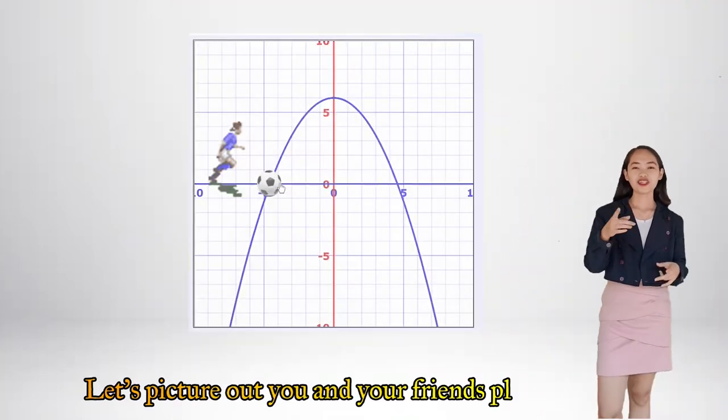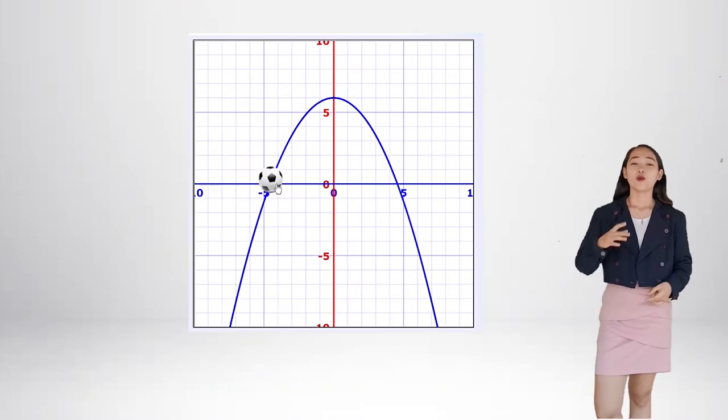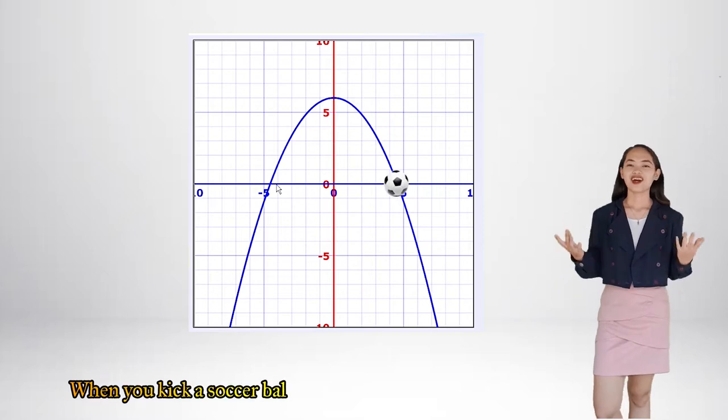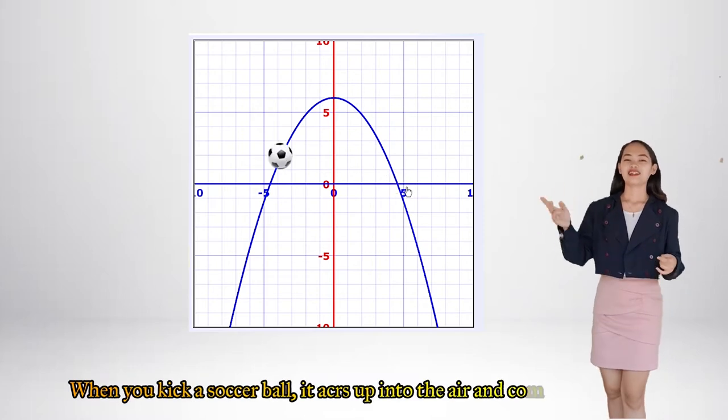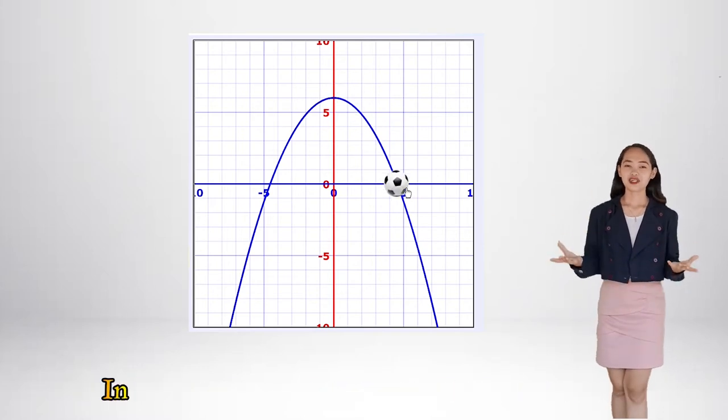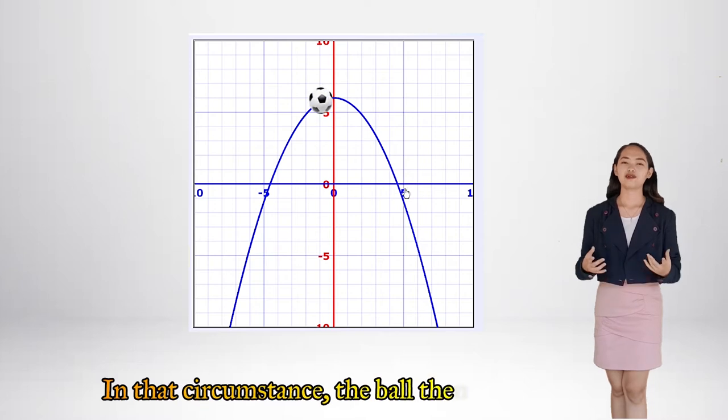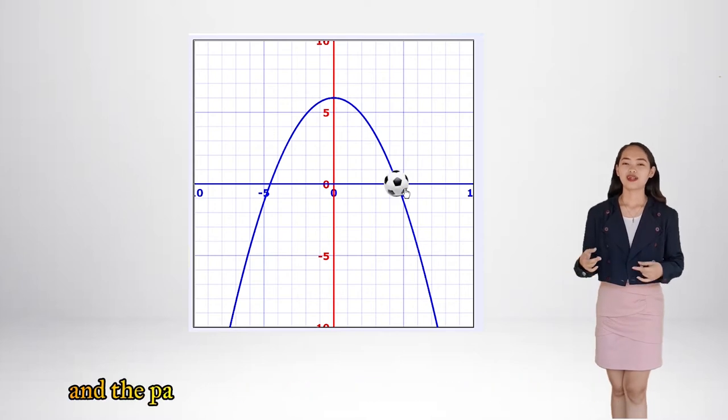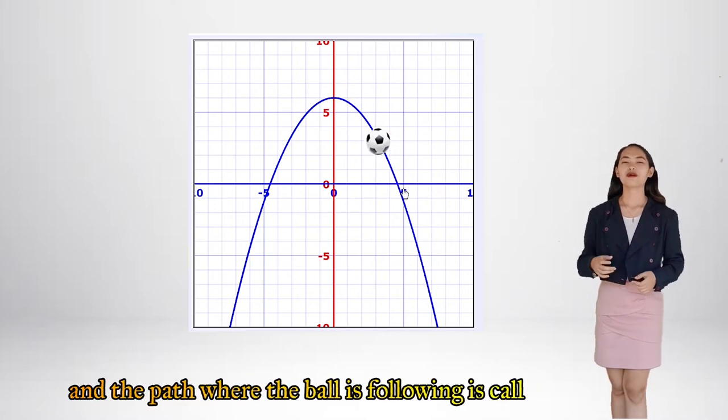Let's figure out you and your friends playing soccer. When you kick a soccer ball, it arcs up into the air and comes down again. In that circumstance, the ball then follows a path. And the path where the ball is following is called a parabola.